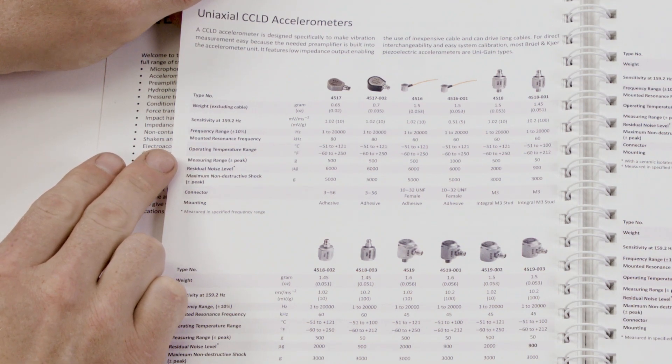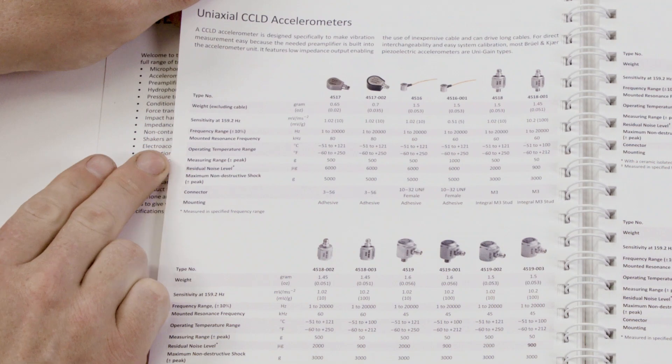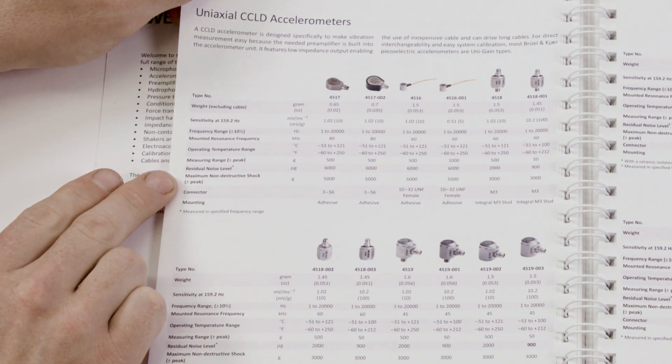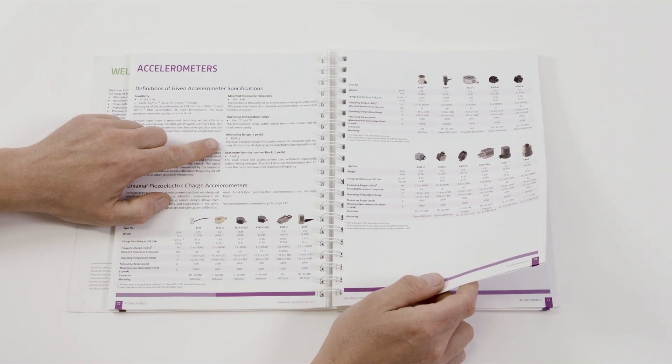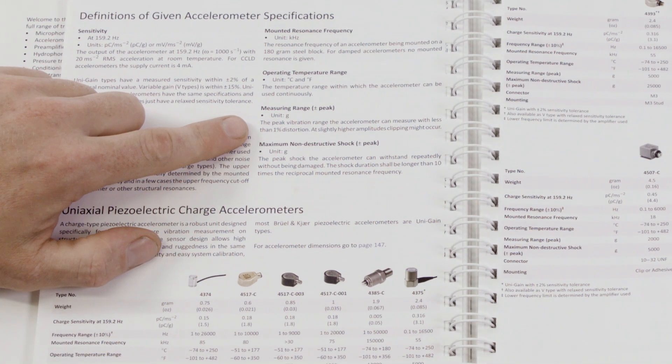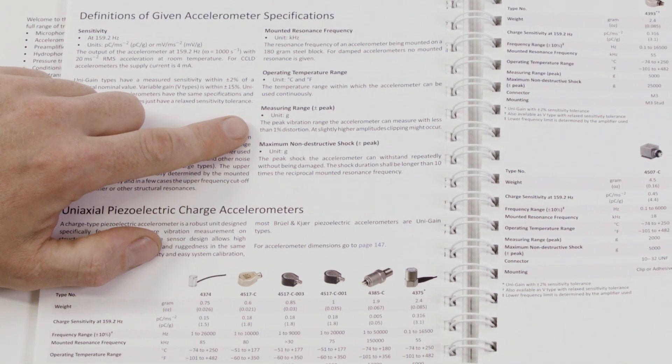Important specifications also being measuring range, which should not be confused with maximum non-destructive shock. So, measurement range states the maximum level that the accelerometer can incur with less than 1% distortion.